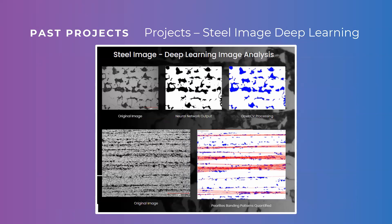We also worked on a project with a company in Dundas called Steel Image, which works in failure analysis. We had microstructure images and they wanted us to perform metrics on them. We passed them through a neural network to denoise the image, isolating black phases — the pearlite phases — using image processing to clean up the images. At the bottom is another example where we quantify the degree of pearlite banding in the microstructure.